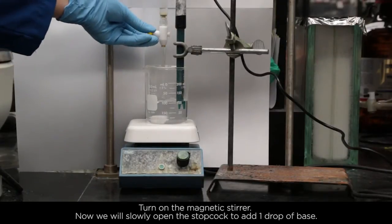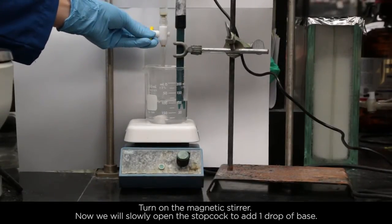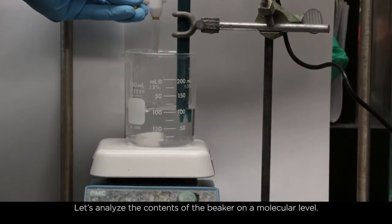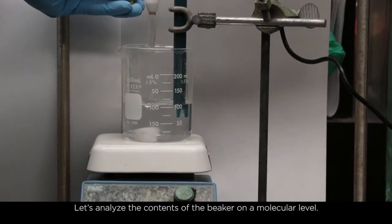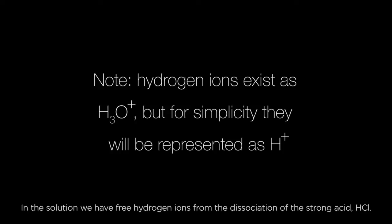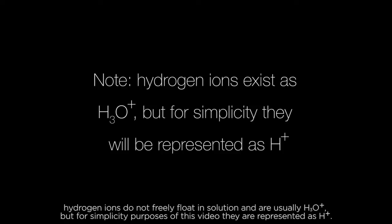Now we will slowly open the stopcock to add one drop of base. Let's analyze the contents of the beaker on a molecular level. In the solution, we have free hydrogen ions from the dissociation of the strong acid HCl. Hydrogen ions do not freely flow in solution and are usually H3O+, but for simplicity purposes of this video, they are represented as H+.